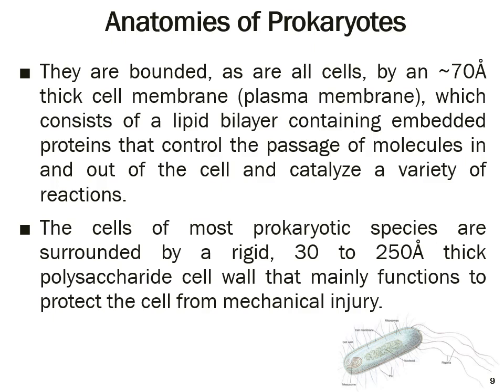All cells are bounded by an approximately 70 angstrom thick cell membrane, also called the plasma membrane. Like other organisms, it has a lipid bilayer — a dual layer of lipids — with proteins embedded in it. These proteins control which molecules can pass in and out of the cell and also act as enzymes. Many prokaryotic cells also have a thick polysaccharide cell wall outside the membrane which protects the cell from injury.